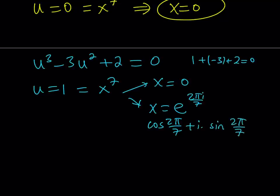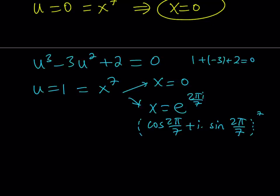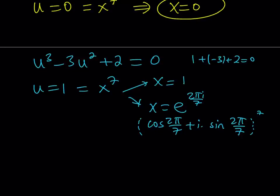What's significant about this is that when you use De Moivre's formula and raise this to the 7th power, what's going to happen is that you're going to multiply 2π/7 by 7, which gives you 2π. And when the argument is 2π, you're basically going to be back at x equals 1. You can use this idea to write all the complex solutions that come from here. But since we're focusing more on the real solutions, x equals 1 is definitely going to be my real solution here. So x equals 1 is another real solution.